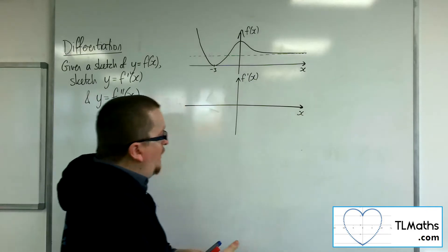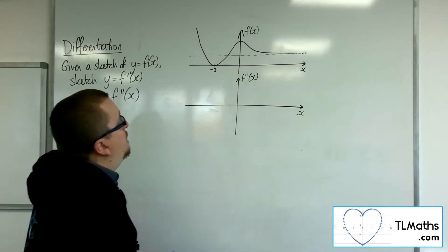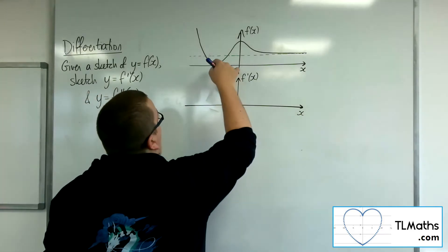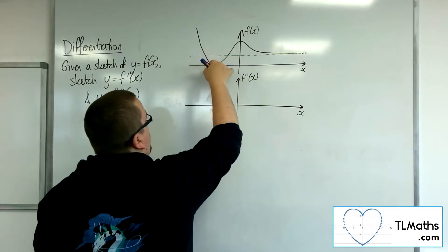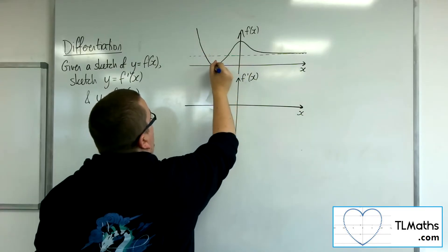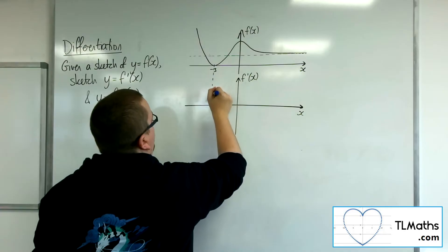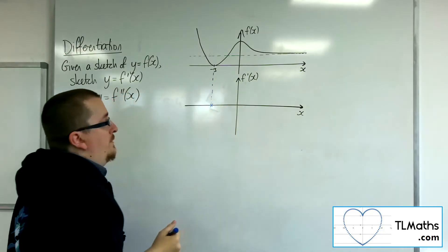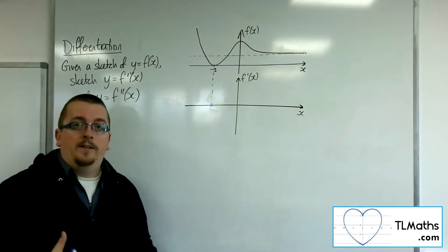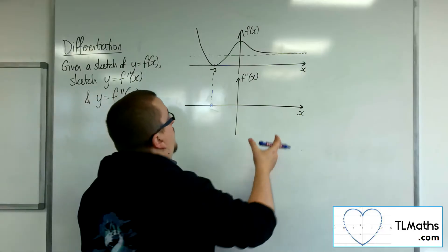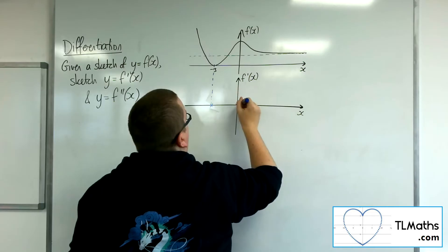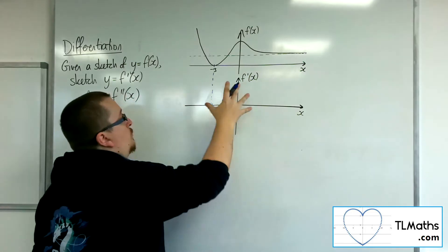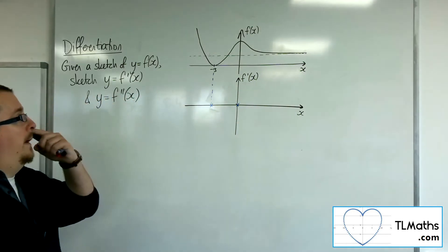At x = -3 we have a stationary point, because that's when the gradient function will be 0, and so that will be precisely where the gradient function crosses the x-axis. Similarly, we've got another stationary point at x = 0, so that means the gradient function is also crossing 0 there.